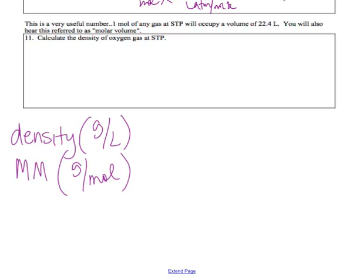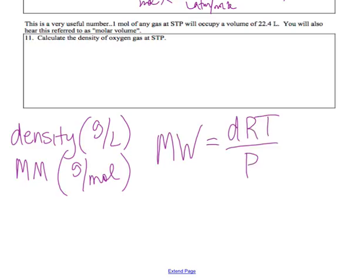How many of you have a cat? When a cat goes to the bathroom in the litter box, what does it do before it gets out? It covers it up. This equation I'm about to show you is called the 'meow' equation. Instead of molar mass, it's molar weight, just because I wanted it to look like 'meow.' Molar weight equals what the cat does: it puts the dirt over the pee. You can use this equation to find density or molar weight of a gas.